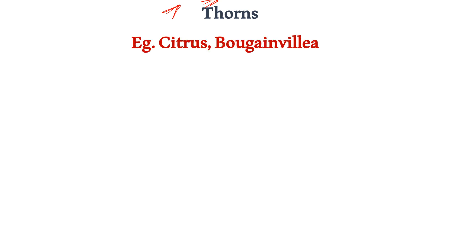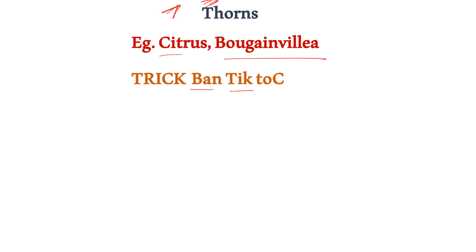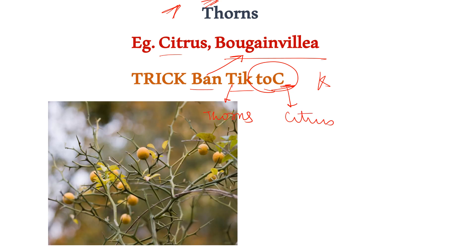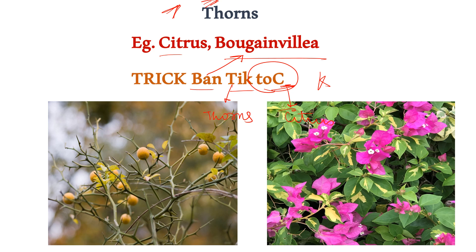Further in stem modification are thorns, which plants use for protection. The examples are citrus and bougainvillea. The trick is: 'ban tick tock.' From 'ban' it's bougainvillea, from 'tick' it's thorns, and from 'tock' — changing K to C — it's citrus. So thorns are also a type of stem modification used for plant protection.